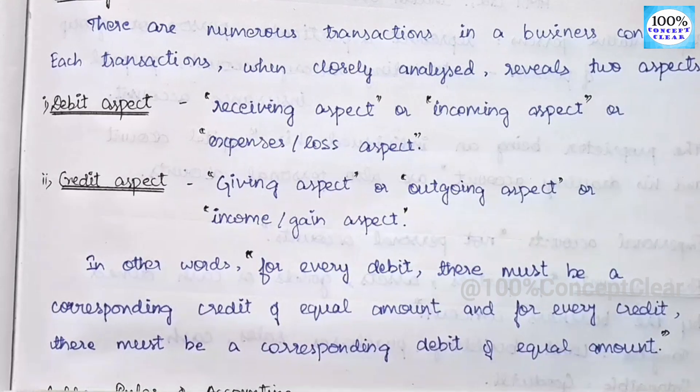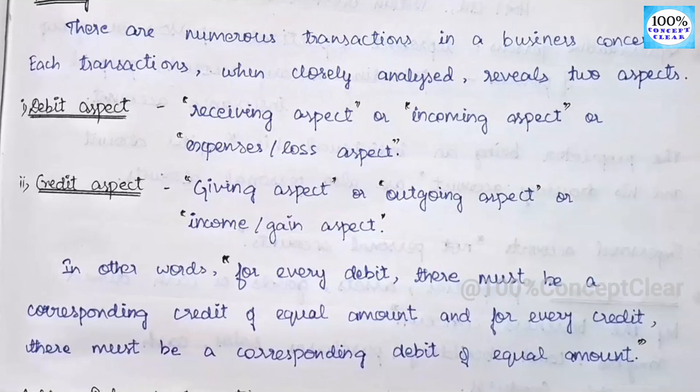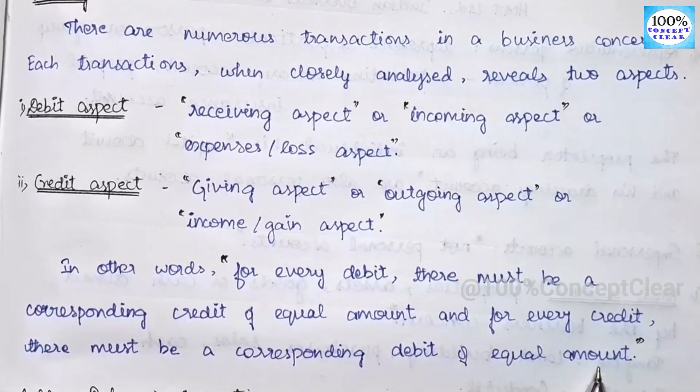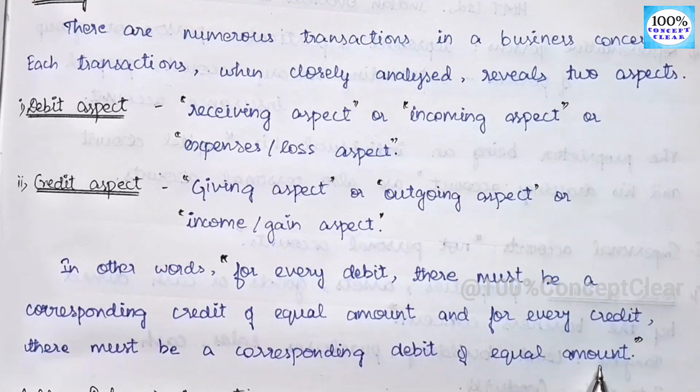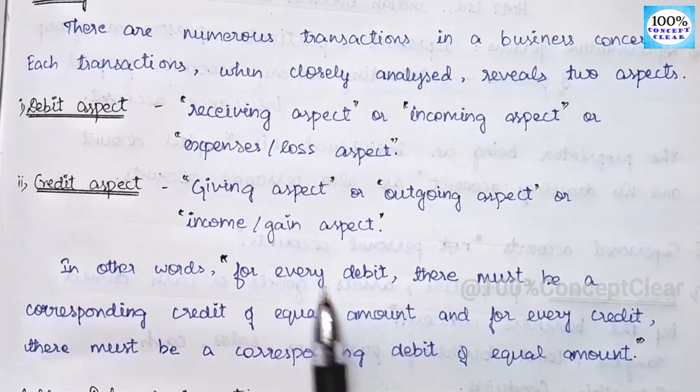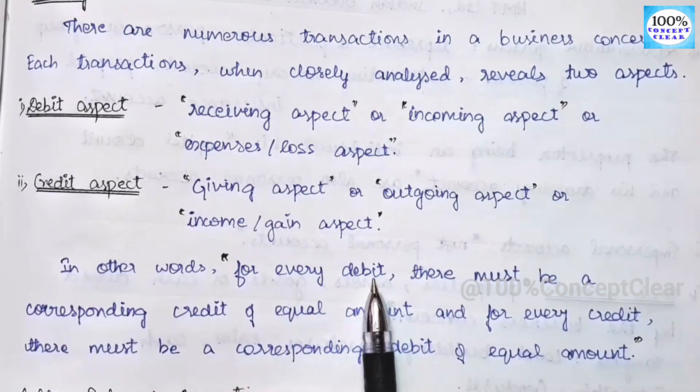Every new term's law comes — for every action, there will be an equal or opposite reaction. That means for every debit, there must be a corresponding credit of equal amount.